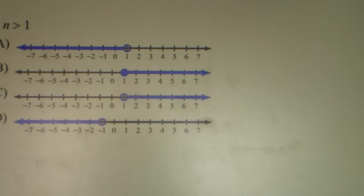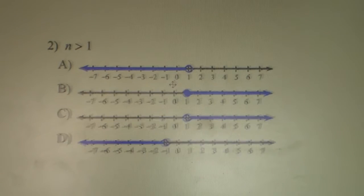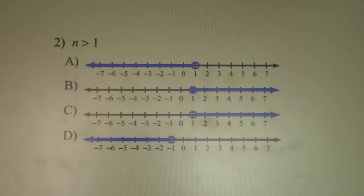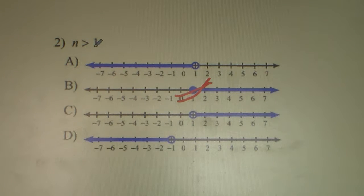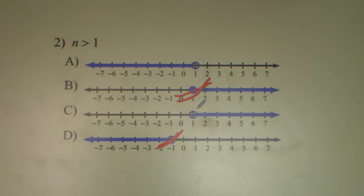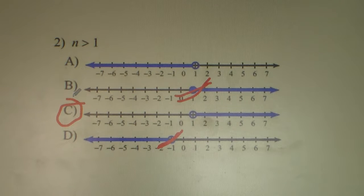Next up, problem number 2. This says N is greater than 1. Notice there's no line underneath, so it's an open circle. So the closed circle is out. This is positive 1, so negative 1 doesn't work out. N is greater than 1, so the arrow's going to the right, not to the left. So number 2 is C.